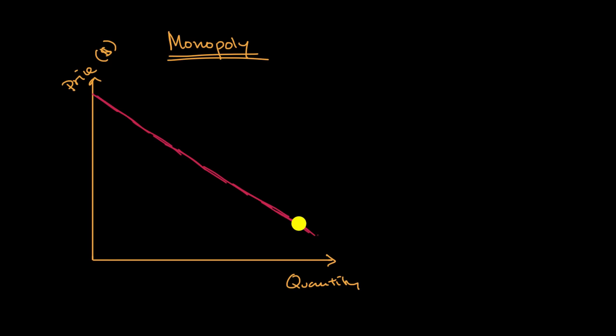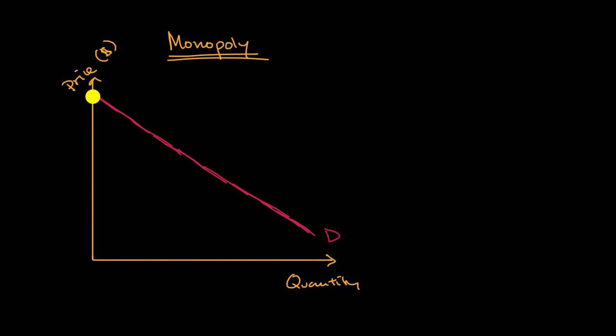What's interesting about any imperfectly competitive firm — and the extreme case is a monopoly — is what the marginal revenue curve looks like given this demand curve. In a perfectly competitive firm, the marginal revenue curve equals the demand curve and is a horizontal line. But here, because when the monopoly firm reduces price, it has to reduce price on all of the units, you have a marginal revenue curve that goes down faster than the demand curve.